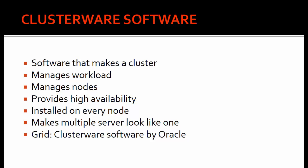The clusterware software must be installed on every node; if it's not installed, that node won't be part of the cluster. It makes multiple servers look like one server to the outside world. You assign a name to the cluster and communicate with it using that name — not an IP address or the physical name of each node, just the cluster name. The clusterware software then allocates the work internally.